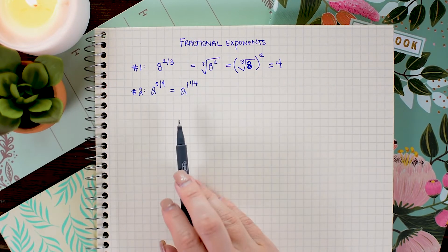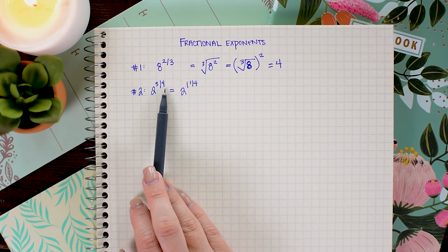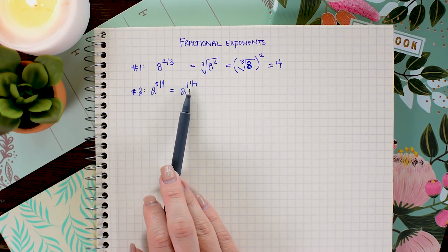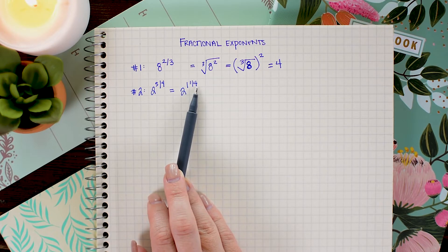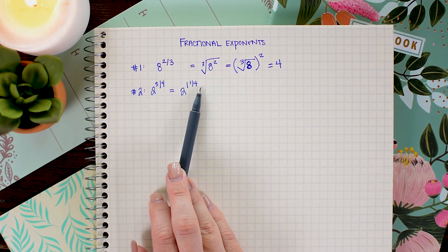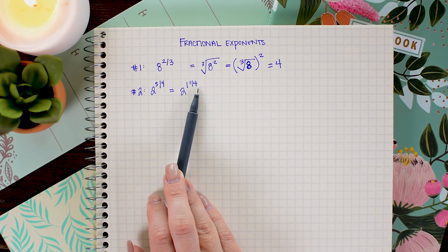Alright, so the first thing I did here was just took the improper fraction of 5 fourths and rewrote it as the mixed number 1 and 1 fourth. Now this is really handy because 1 and 1 fourth is the same as 1 plus 1 fourth. And you'll see in a second why that's a nice thing to have.